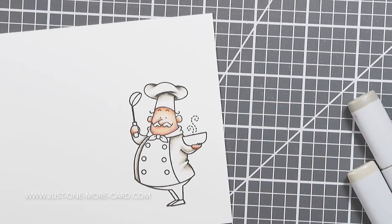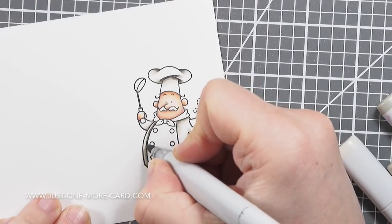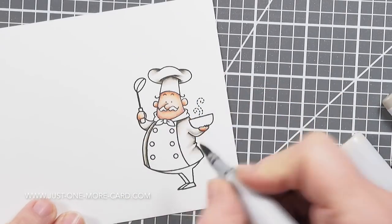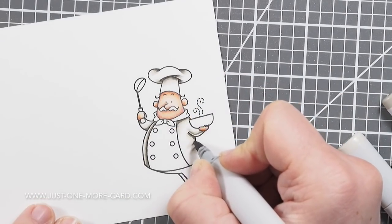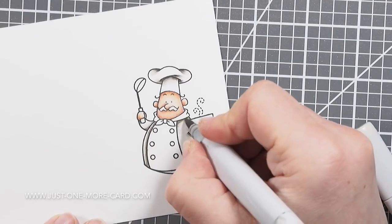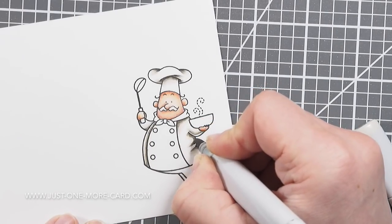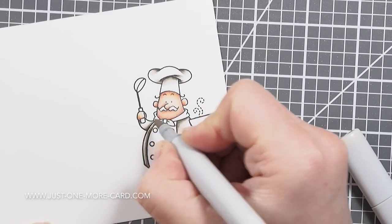So you can use the pencils to enhance shadow areas or certain details, but you don't have to spend as much time blending color out to make sure they have an even layer of color. I hope that makes sense.